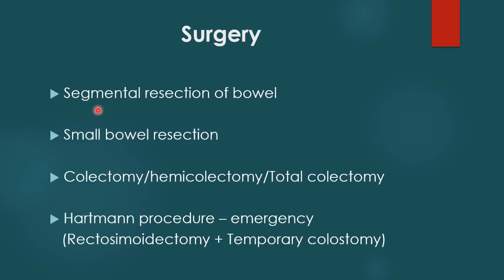Surgery for lower GI bleeding involves segmental resection of the bowel — removing the segment where the bleeder is, thereby removing the source of bleeding. If it is a small bowel, resection of the small bowel is done. If it is a large bowel, hemicolectomy or total colectomy is performed, removing the segment containing the bleeding. Hartmann's procedure, especially used for emergencies, involves removal of the rectosigmoid with a temporary end colostomy.